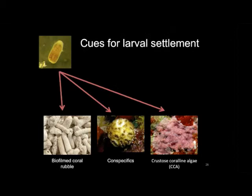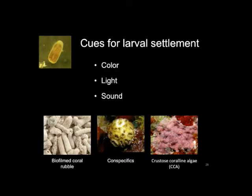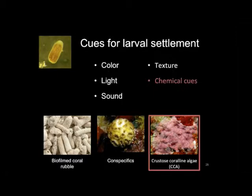There are a number of cues for larval settlement known in the literature: biofilm and coral rubble as positive stimulants, conspecifics, crustose coralline algae, the color of the bottom, light, sound, and the texture of the bottom. All these physical features of the bottom, and of course chemical cues, can all play a role here. I'll be focusing on the chemical cues and the role of crustose coralline algae.